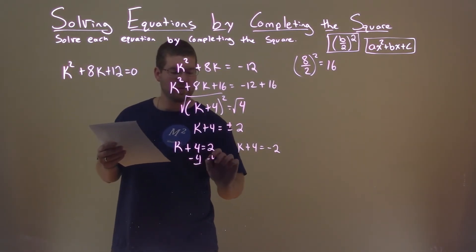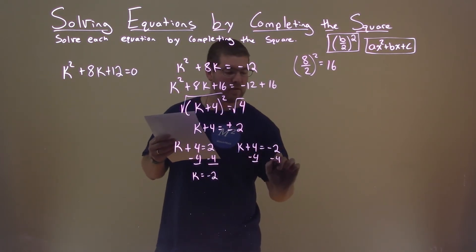Subtract the 4 to both sides, and we have k equals negative 2 here. Subtract the 4 to both sides, and k equals negative 6 here.